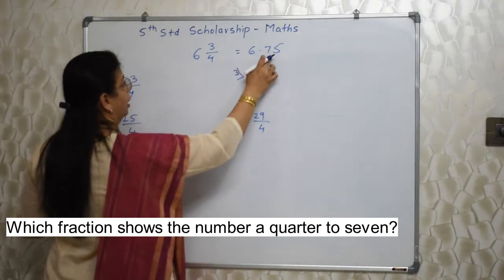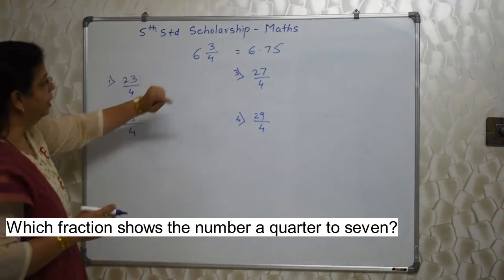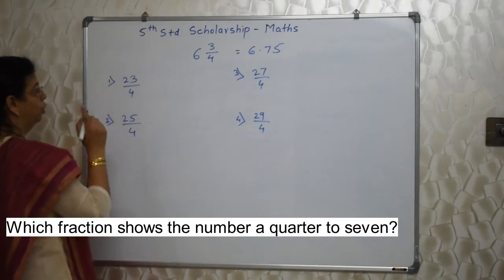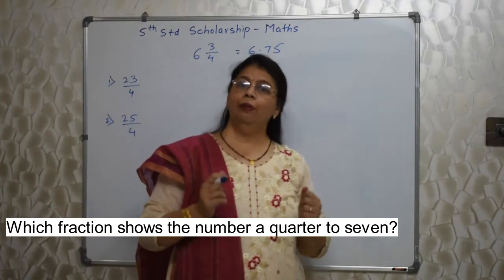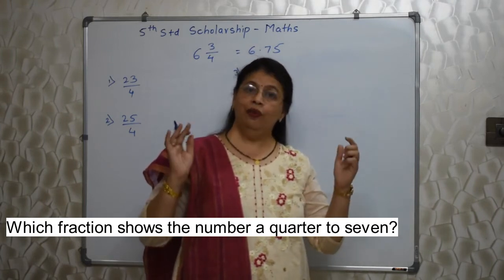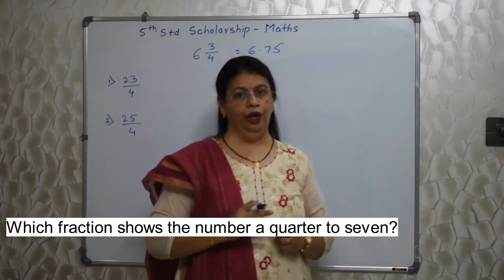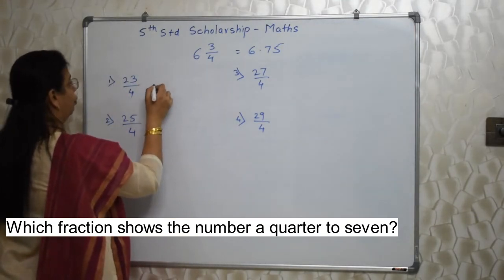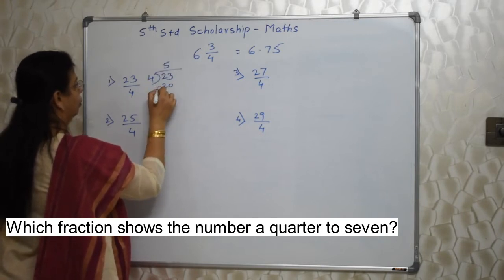We need to convert this into a mixed fraction. You all know how to do this — convert improper fraction to mixed fraction. In case you don't know, I suggest you see my fractions video; it is a very exhaustive video covering everything about fractions. So 23 upon 4 is 23 divided by 4 — quotient 5, remainder 3, so written as 5 and 3 upon 4.